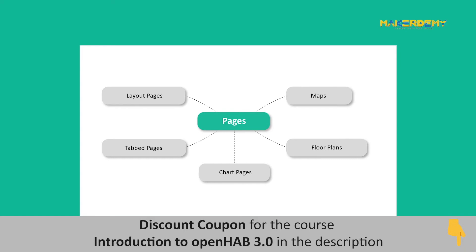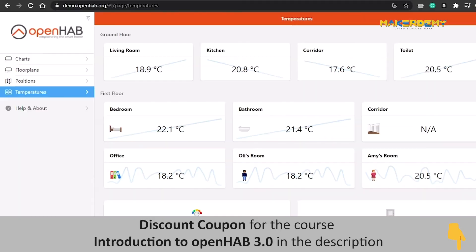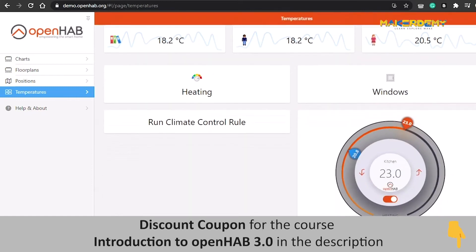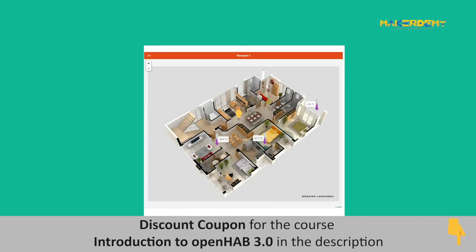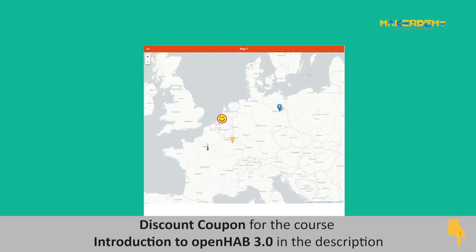Now let's look at the different pages that OpenHAB 3.0 offers. Layout pages are the most common and flexible way of displaying information, with extensive customization options and support for built-in and user-designed widgets. Maps and floor plan pages can display geographical information with markers on a background overlay. Overlays for floor plans can be custom images imported by the user, while maps provide zoom-in and zoom-out options for an actual map layer or satellite view.